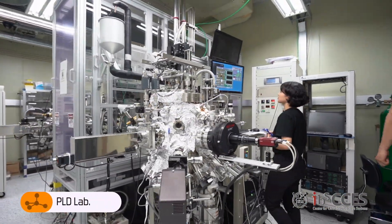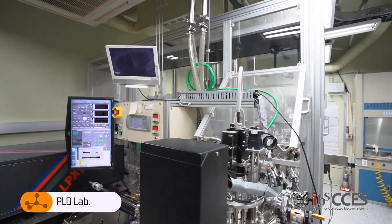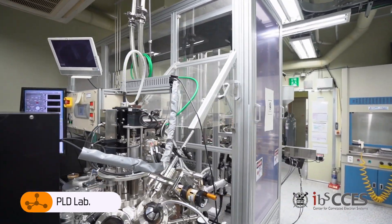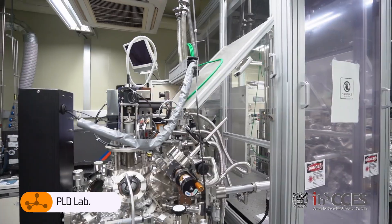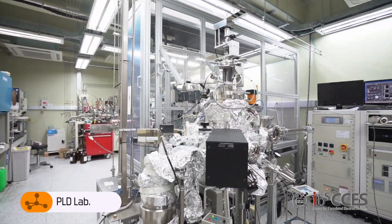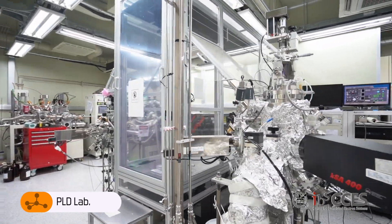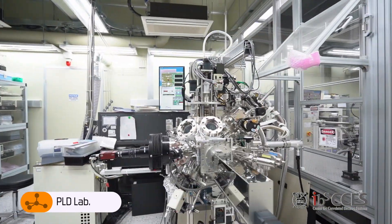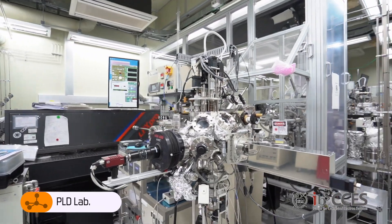Now let's move on to the Pulse Laser Deposition Lab. Our center has five PLD machines. Four are located in this room, and they are specialized for growing high-quality oxide thin films. The other machine is part of the in-situ ARPES cluster, which will be introduced later. In order to avoid cross-contamination, each chamber is designated for specific materials.